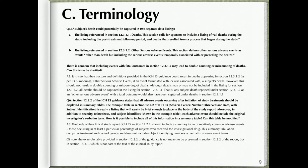There is concern that including events with fatal outcomes in section 12.3.1.2 may lead to double counting or miscounting of deaths. Answer five: It is true that the structure and definitions provided in ICH E3 could result in deaths appearing in section 12.3.1.2 (Other Serious Adverse Events) if an event terminated with or was associated with a subject's death. However, this should not result in double counting. All deaths should be captured in the listing for section 12.3.1.1 — any subject death reported under 12.3.1.2 would also have been captured under Deaths in 12.3.1.1.